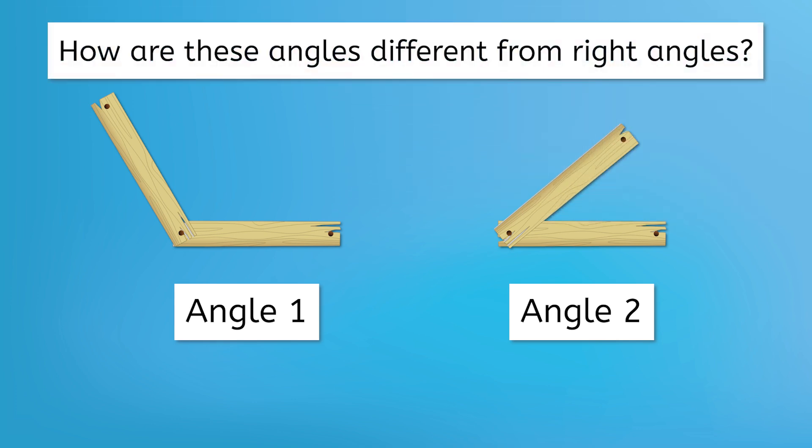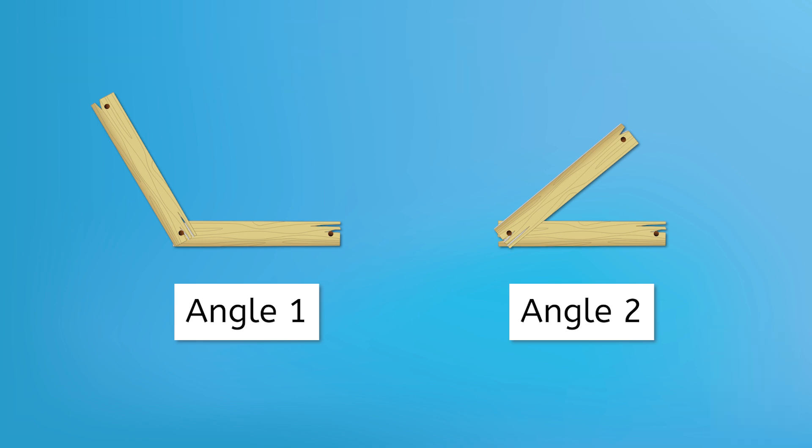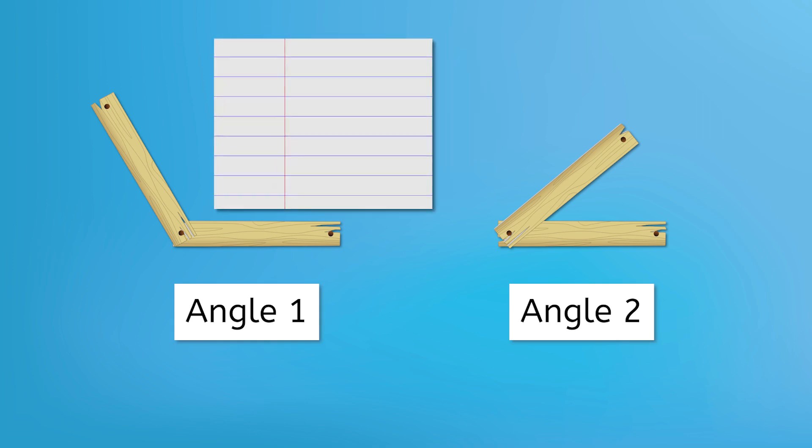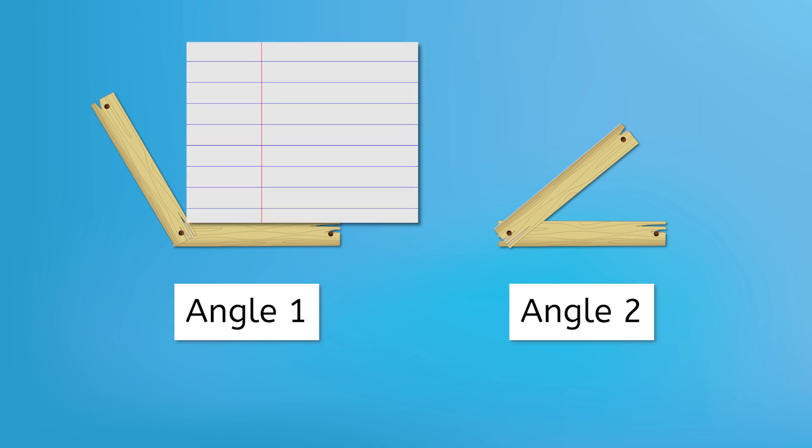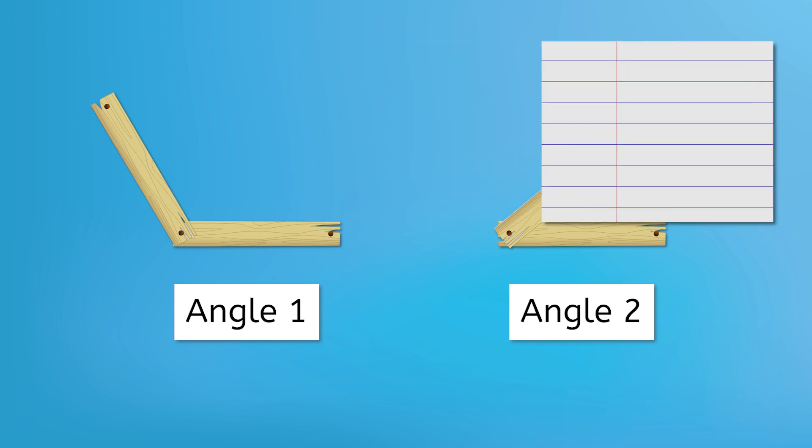How are these angles different from right angles? Write down your thoughts in your guided notes. One thing I noticed is angle one is open wider than angle two. When I put the corner of my paper into angle one, there was extra space left in the angle. Angle two is narrower. And when I put the corner of my paper into angle two, I couldn't even see the angle anymore. It was all covered up.